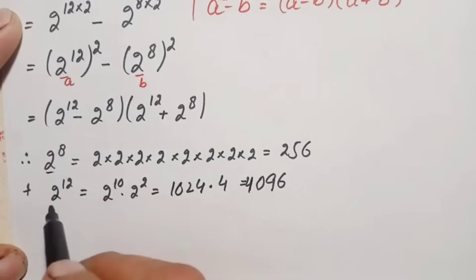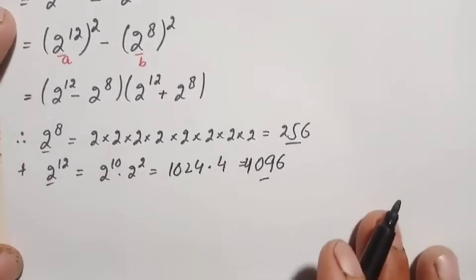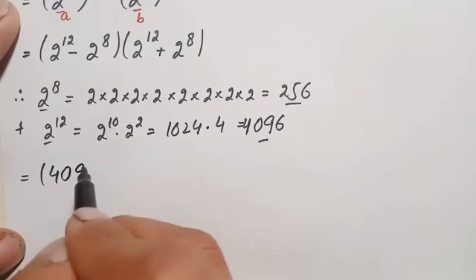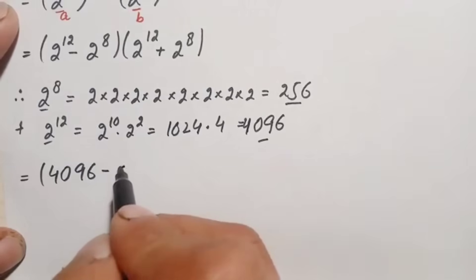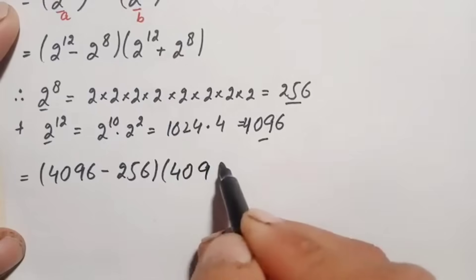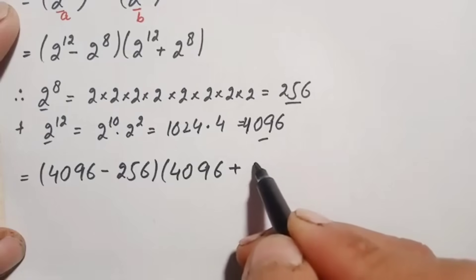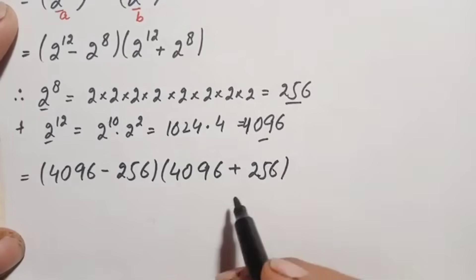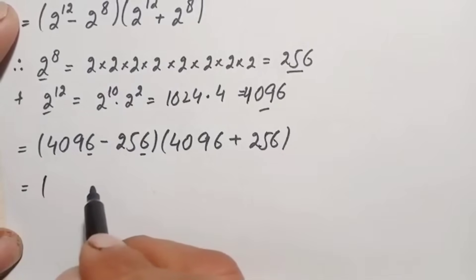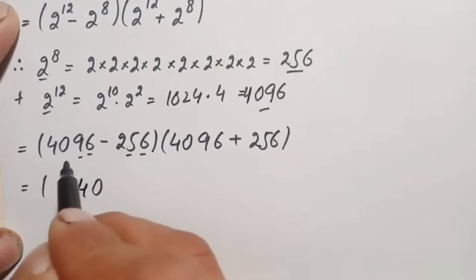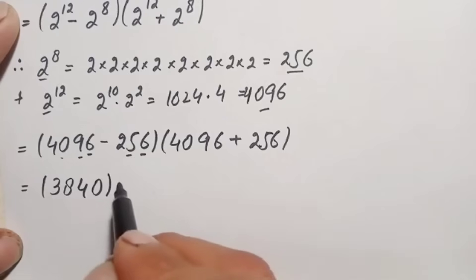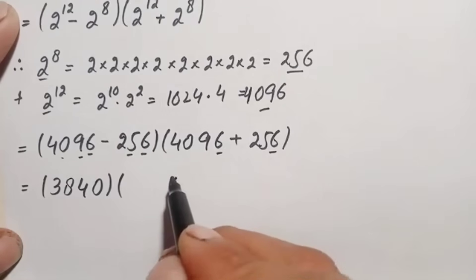We substitute these values into the expression: (4096 minus 256) times (4096 plus 256). Subtracting: 6 minus 0 is 0, 9 minus 5 is 4, 0 minus 2 is not possible so we borrow — giving 3840.